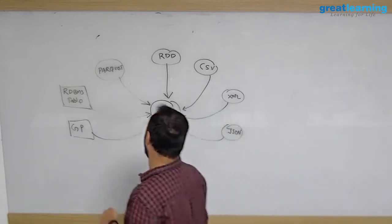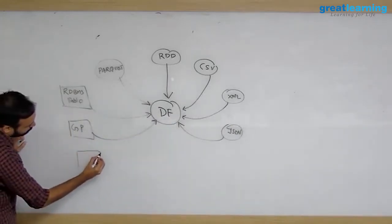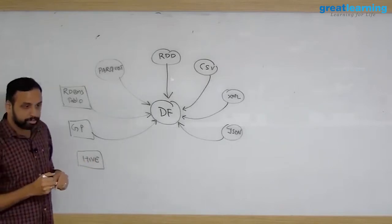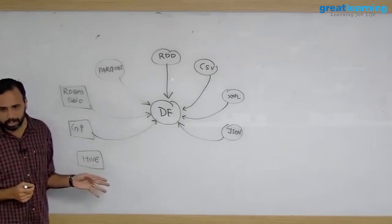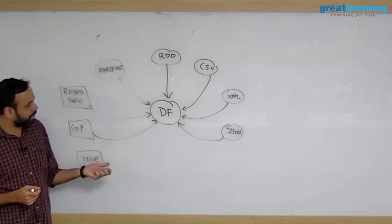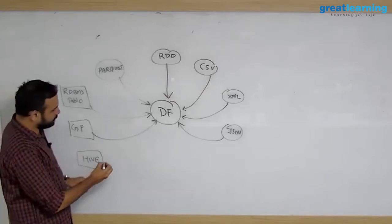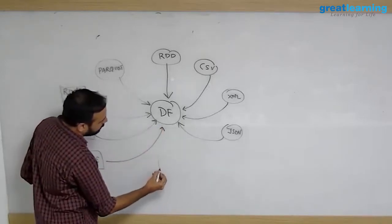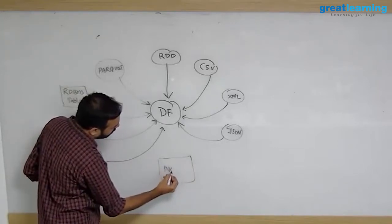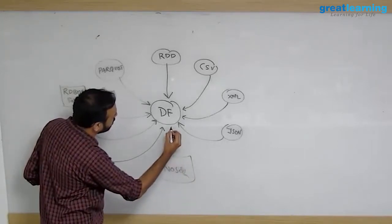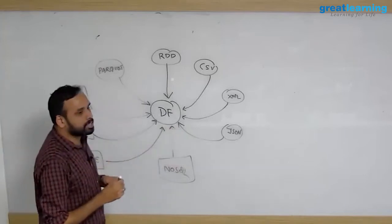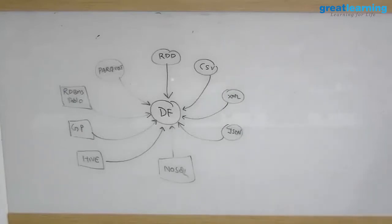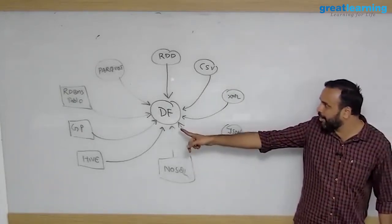Also you can create from Hive - very important. Hive is by default your data warehouse on Hadoop where you create all the tables. If I have a table in Hive, I can read and create a data frame. Also, any NoSQL database - any NoSQL you have, you can read. This is the true power of data frames. From any source you can get the data. You can read from Cassandra, dump it into an RDD.